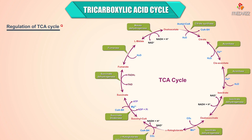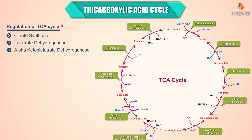Regulation of the citric acid cycle involves citrate synthase, isocitrate dehydrogenase, alpha-ketoglutarate dehydrogenase, and pyruvate dehydrogenase, which is also considered a regulatory step of the citric acid cycle.